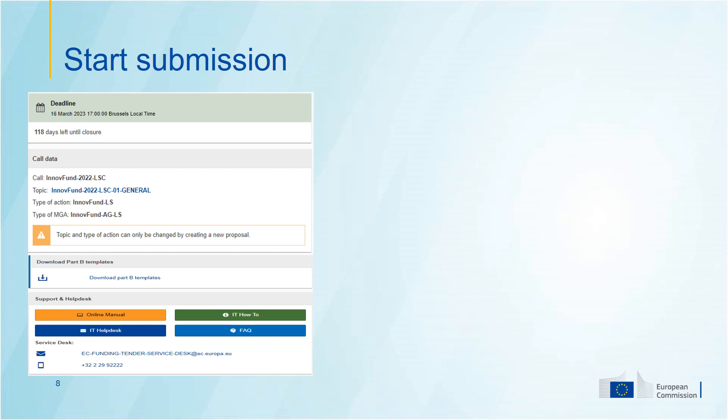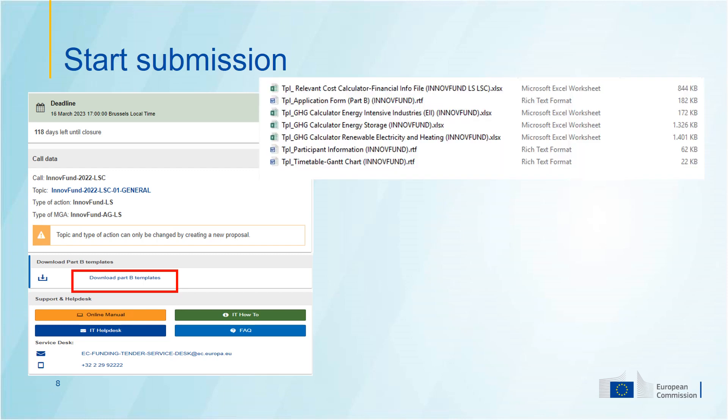On the submission service, you will find this menu. Once you get there, you can also download the Part B templates. What can you find there? The application form Part B, which you need to fill in with the technical information on your proposal. The relevant cost calculator. The GHG calculators — you have three different calculators available, but you need to submit only one: the one that corresponds to the methodology that you have chosen for your proposal. And two other compulsory documents: the participant information and the Gantt chart.